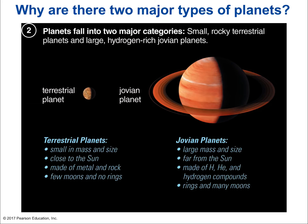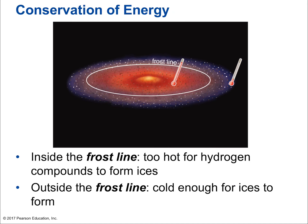What about the two major types of planets? Why should we expect rocky planets near the star and gassy planets further away? Quick summary: terrestrial planets are small in mass and size, close to the sun, made of metal and rock, with few moons and no rings. Jovian planets are large in mass and size, far from the sun, made of helium and hydrogen, with rings and many moons. It's all about temperature.